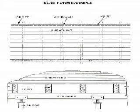This graphic shows plan and section views of a typical slab forming system. A typical system consists of sheathing material, which supports and contains the wet concrete, is supported by joists, joists are supported by stringers, and stringers are supported by shores. The shores transfer the load to a supporting surface.